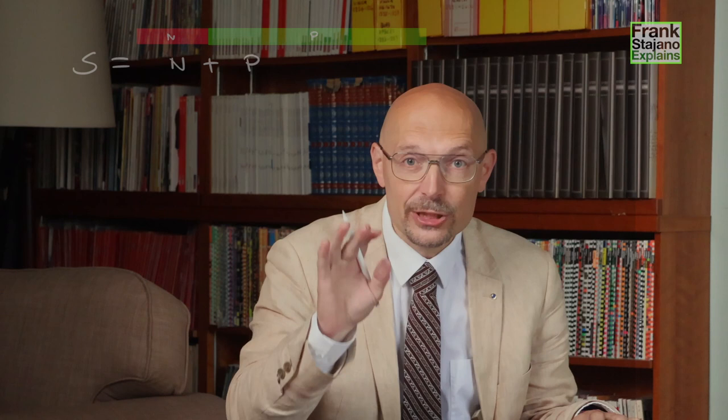Let's say the system takes time s to complete the task with s equals n plus p, where p is the time of the parallelizable part and n is the time of the part that cannot be parallelized. So imagine here n is a quarter and p is three quarters of s. If I wanted the whole thing, the system has to go 10 times faster. By how much would I need to speed up the part that I can speed up, p? By 10 times? By 20 times? 40 times? Stop the video and try to figure it out for yourself. Don't continue until you have your own answer. It's not hard, but it's important you figure it out for yourself.